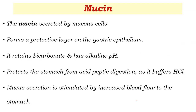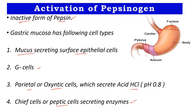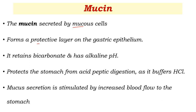Mucin is secreted by the mucus cells, which are located throughout the stomach lining. Its function is to form a protective layer on the gastric epithelium. On the epithelial cells lining the stomach, mucin forms a protective lining and retains bicarbonate, giving an alkaline pH, which protects the stomach from acid-peptic digestion by buffering with HCl.